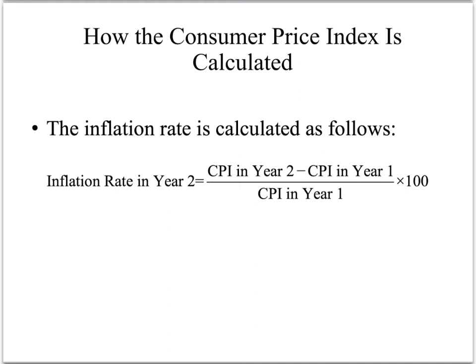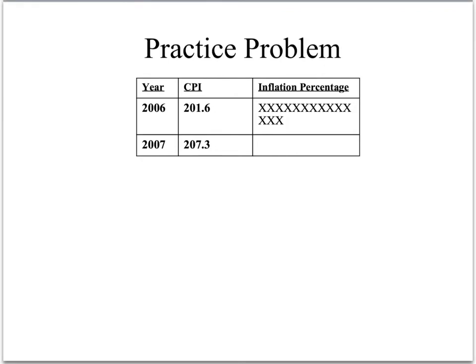The CPI in year 2 and inflation rate in year 2 refers to whatever year is closer to today. Here are the CPI numbers for 2006 and 2007. We can't calculate the inflation percentage for 2006 because we do not have on this table the CPI information for 2005.